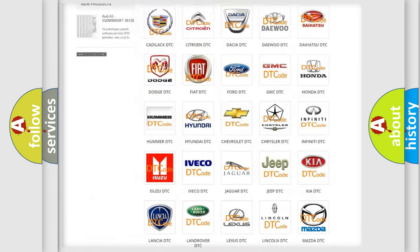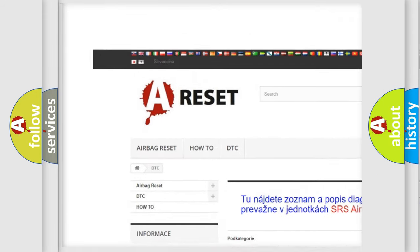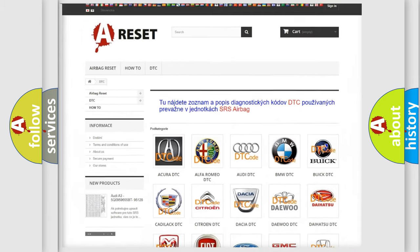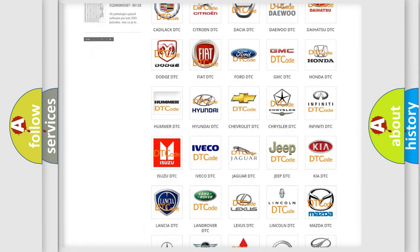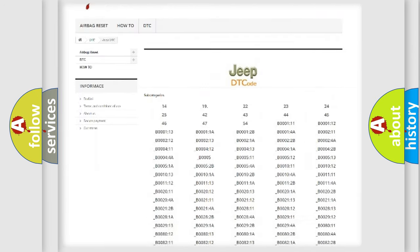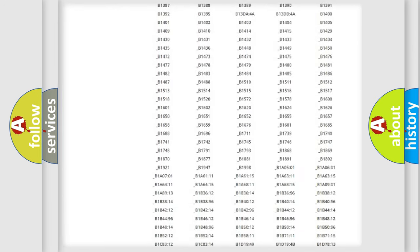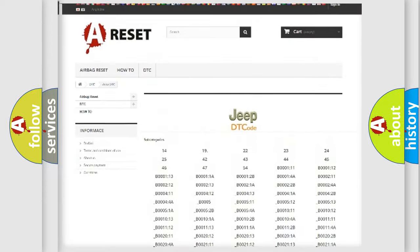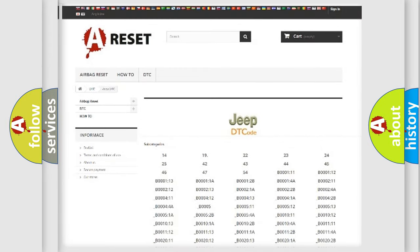Our website airbagreset.sk produces useful videos for you. You do not have to go through the OBD2 protocol anymore to know how to troubleshoot any car breakdown. You will find all the diagnostic codes that can be diagnosed in Jeep vehicles, also many other useful things.